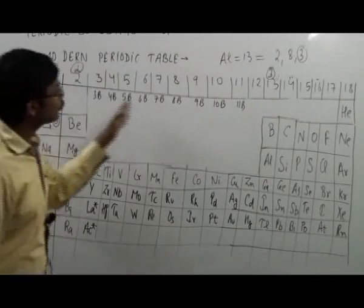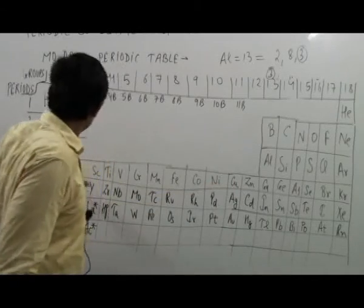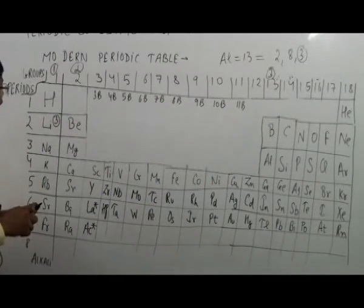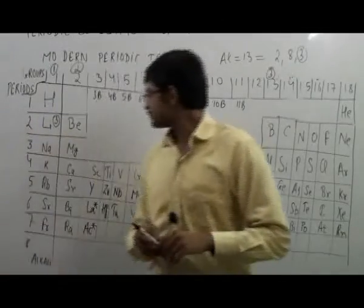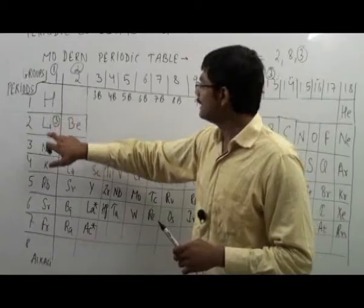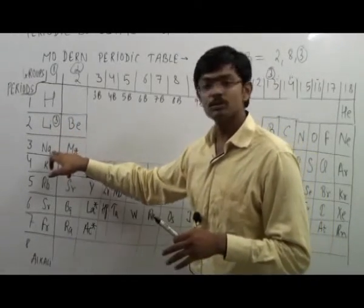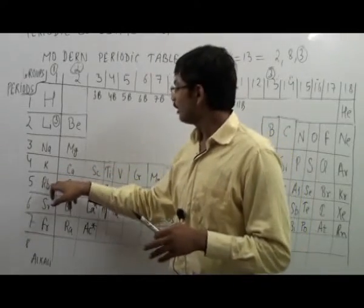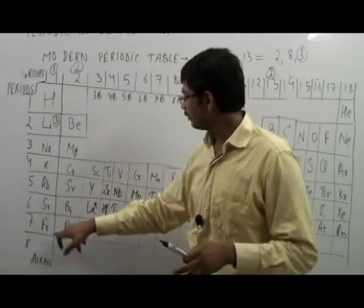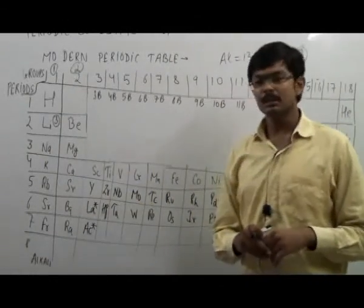I will tell you group-wise for the 1, 2, 13, 14, 15, 16, 17, 18, and like this, in the period-wise for 3, 2, 12. So for group 1, we can learn it as 'Halina Ke Rub Silphire.' That means H stands for Hydrogen, Li stands for Lithium, Na stands for Halina, Na stands for Sodium, K means K, Rub means Rb, Ser means Sr, Phire means Fr. So it can be remembered as 'Halina Ke Rub Silphire.'